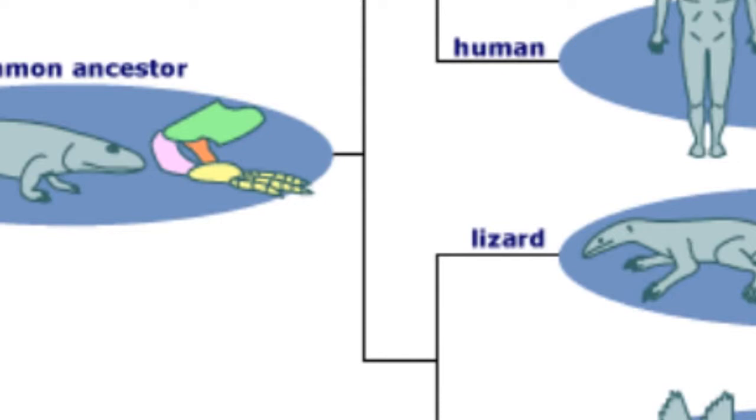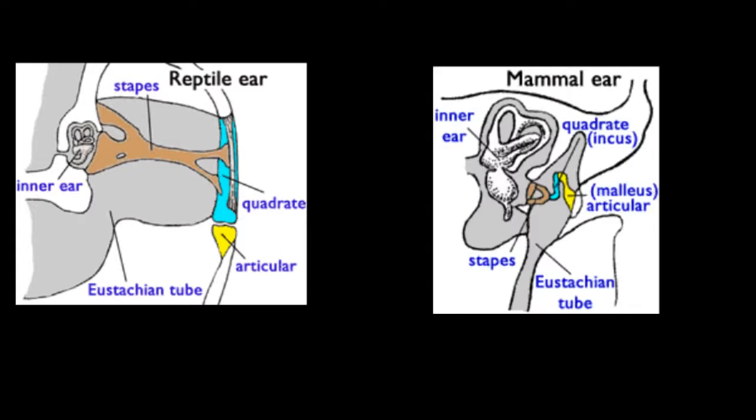A quick glance at the jaws and ears of reptiles and mammals will show you that they're very different. From embryology, it's undisputed that in reptiles, the quadrate and articular bones develop into two bones in the lower jaw, while in mammals they develop into two bones in the middle ear. Interestingly, the reptilian middle ear only has one bone, while the mammalian middle ear has three. So if evolution is true, what must have happened is that the quadrate and articular bones in the reptilian jaws were changed and readapted to form the two additional bones in the mammalian middle ear.